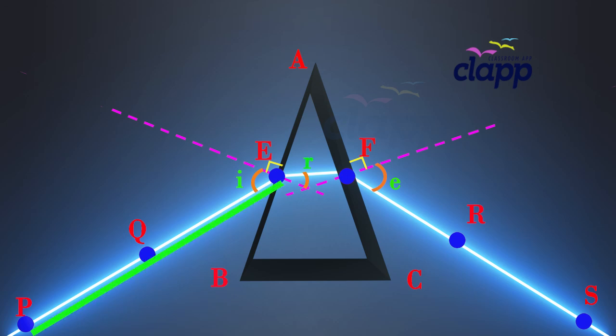Here PE is the incident ray, EF is the refracted ray, and FS is the emergent ray.